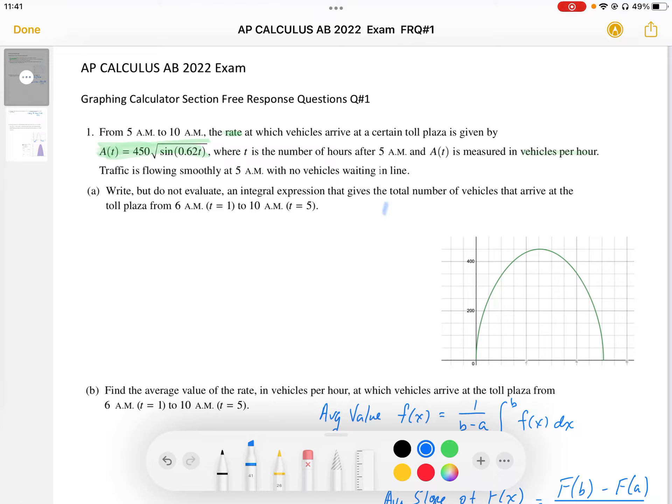In general, the accumulation is going to be the integral of the rate from a to b of the rate function. That's our accumulation. We want the integral for accumulation, the total number of vehicles.